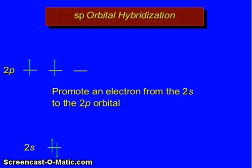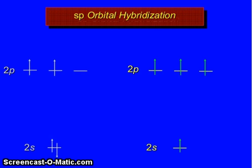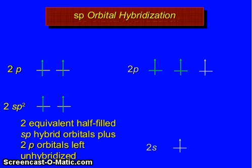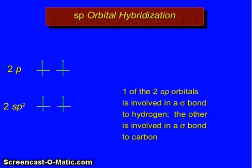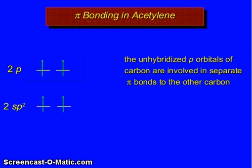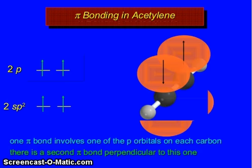Promote an electron from the 2s to 2p orbitals. Mixed together, hybridize the 2s orbital and one of the 3 p orbitals: 2 equivalent half-filled sp hybrid orbitals plus 2 p orbitals left unhybridized. One of the 2 sp orbitals is involved in a sigma bond to hydrogen; the other is involved in a sigma bond with the second carbon. The unhybridized p orbitals of carbon are involved in separate pi bonds to the other carbon. One pi bond involves one of the p orbitals on each carbon; there is a second pi bond perpendicular to this one.